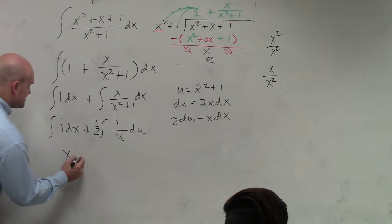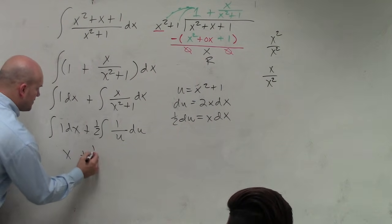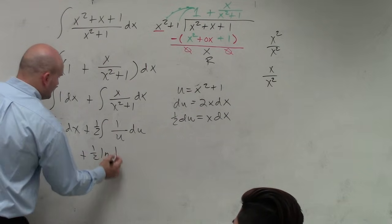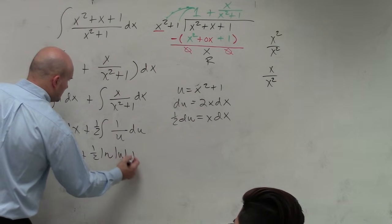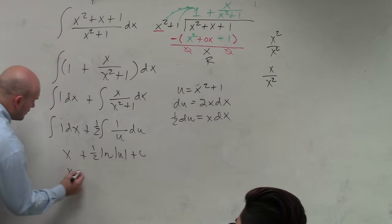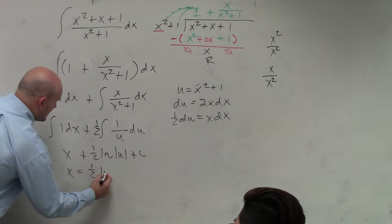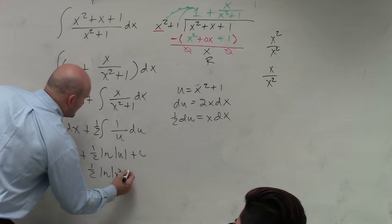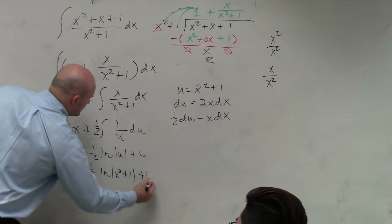So this is going to be x plus 1 half ln of u plus c, or x plus 1 half ln of x squared plus 1 plus c.